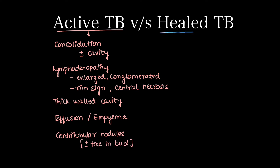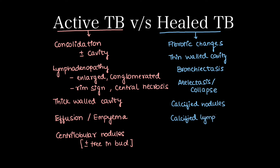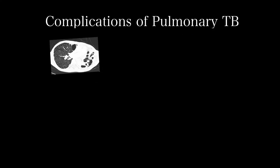Healed tuberculosis shows features like fibrotic changes, thin-walled cavitations, bronchiectasis, atelectasis or collapse of lung segments, and calcified nodules. Lymph nodes can be calcified in chronic stages, and there can be pleural thickening or calcification as a sign of healing.